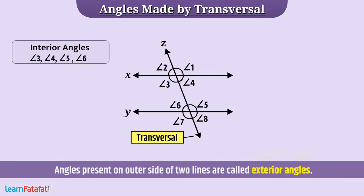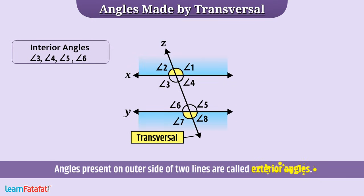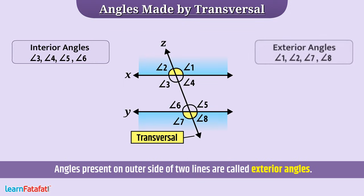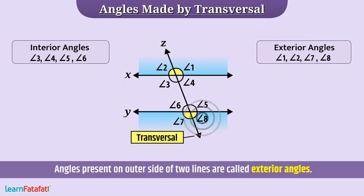Similarly, angles present on the outer side of the two lines are called exterior angles. Here, angle 1, angle 2, angle 7, and angle 8 are exterior angles.